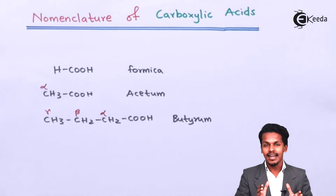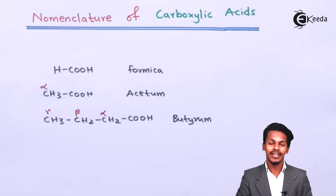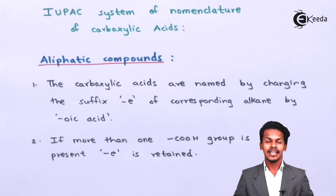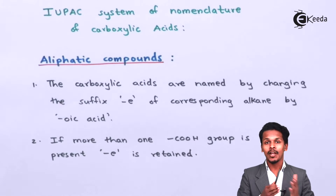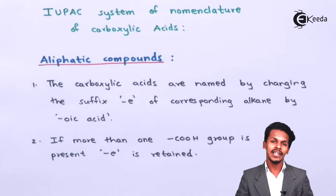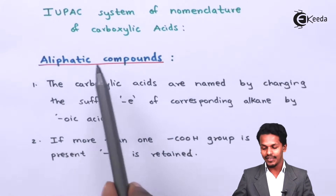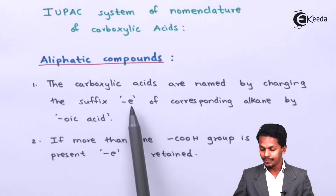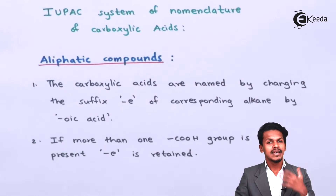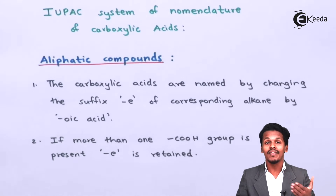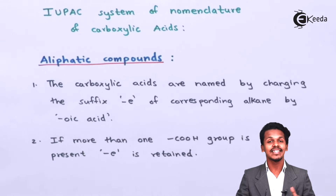Now the main content is IUPAC nomenclature. Carboxylic acids are classified into aliphatic and aromatic. For aliphatic compounds, carboxylic acids are named by changing the suffix '-e' of the corresponding alkane to '-oic acid.' For example, if we have ethane and replace a hydrogen with a COOH group, the total carbon count becomes 3, corresponding to propane, so the name becomes propanoic acid.